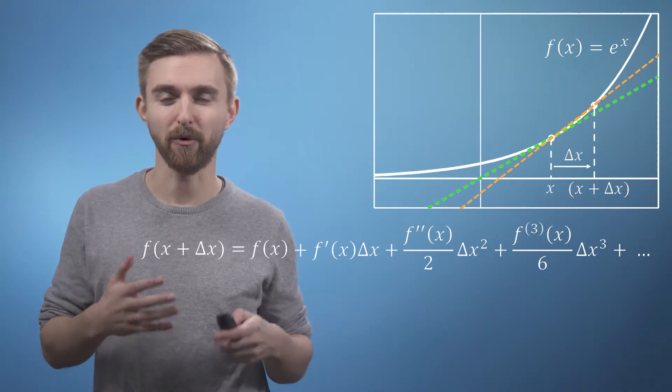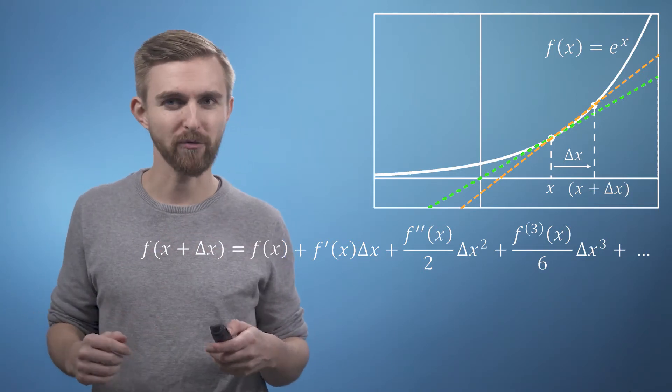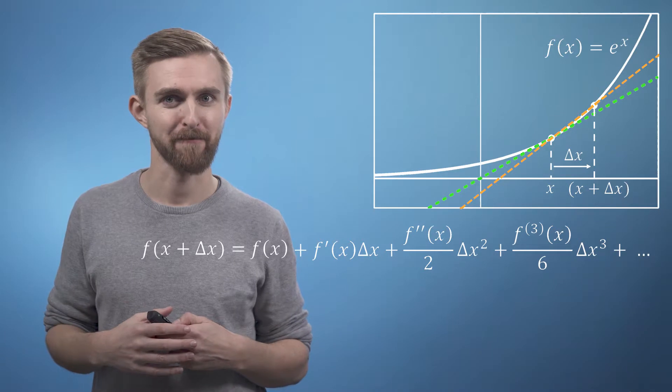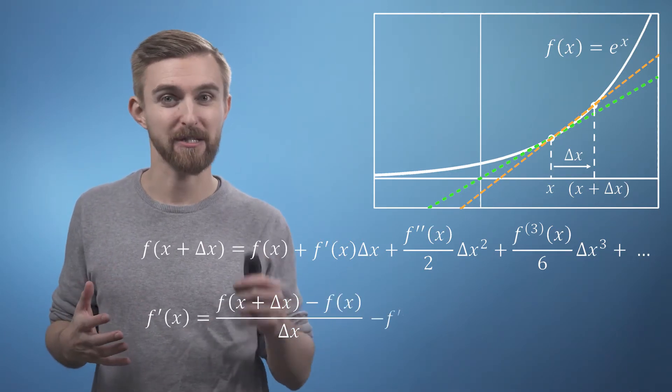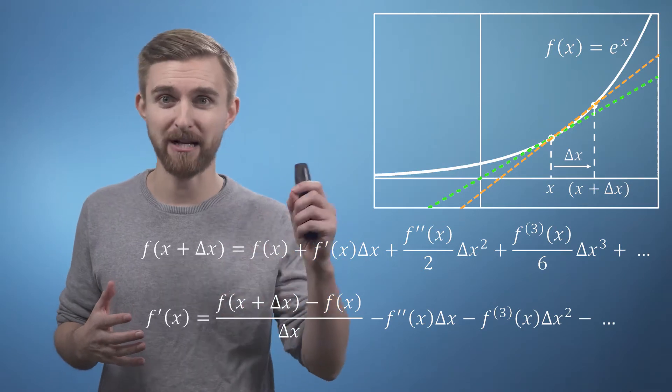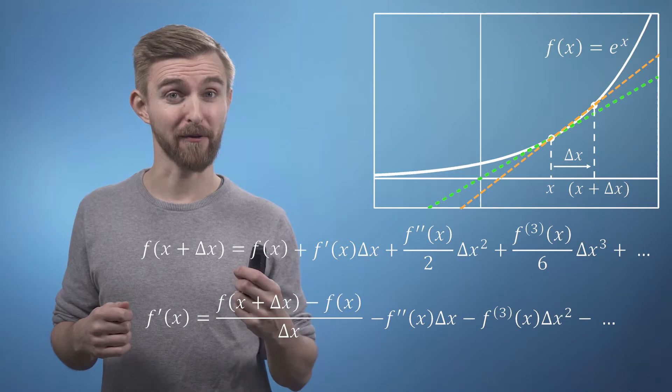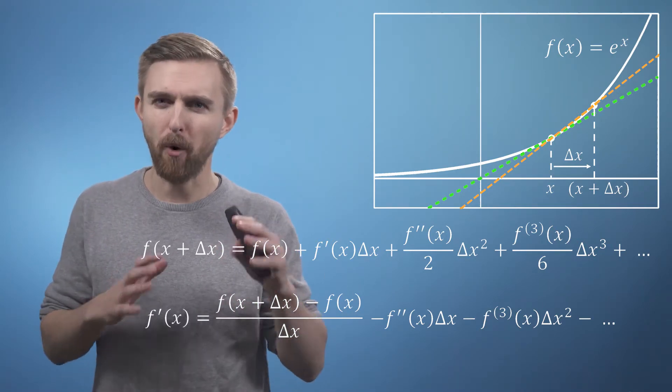Well, your calculated gradient will now contain an error, and once again we can rearrange the full Taylor series to work out how big we'd expect that error to be. With a bit of slightly fiddly algebra, we can rearrange this expression such that the gradient term f' of x is isolated on the left hand side.